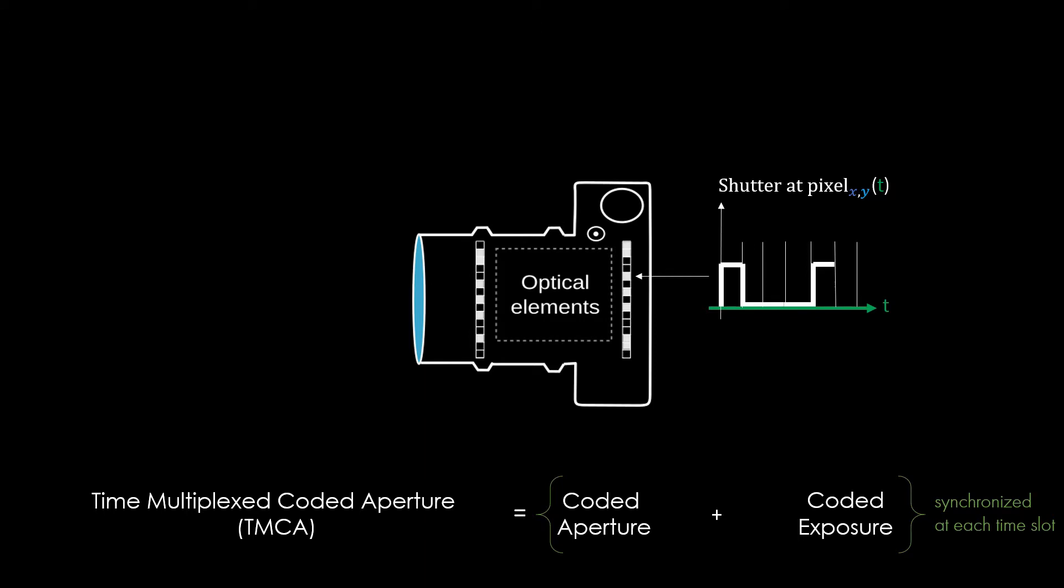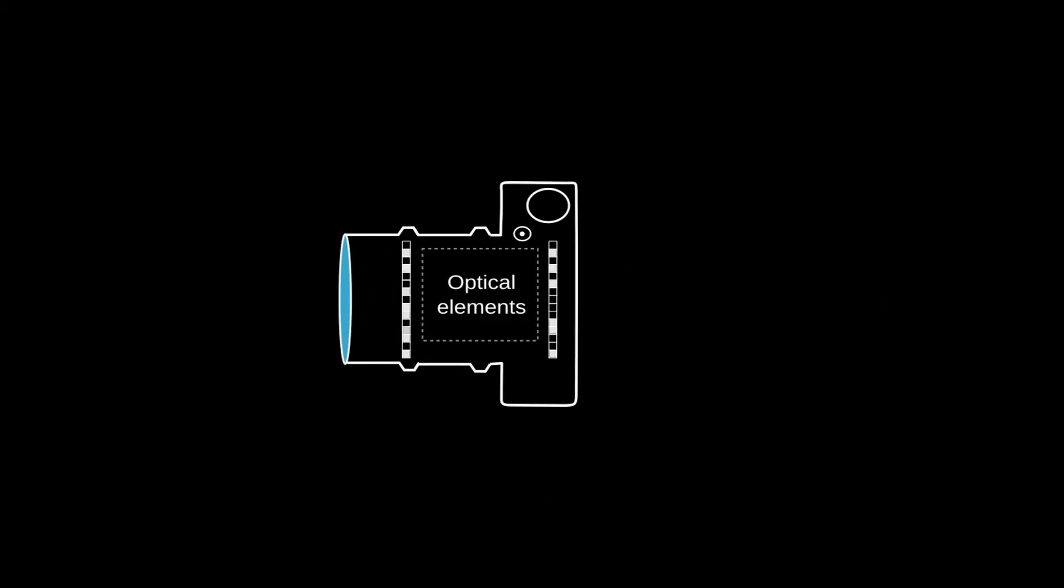We show this new type of codification is superior in terms of conditioning of the sensing matrix and leads to better reconstruction quality. Note, time-multiplexed coded apertures do not necessarily lead to a higher complexity compared to coded aperture systems, since the coded exposures can be realized electronically in pixels.